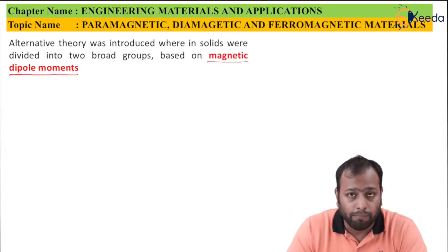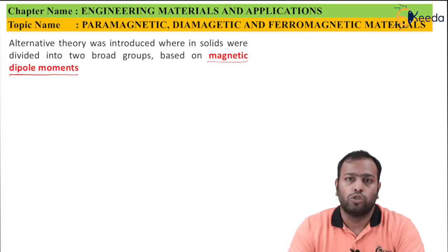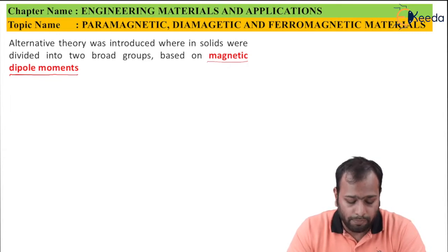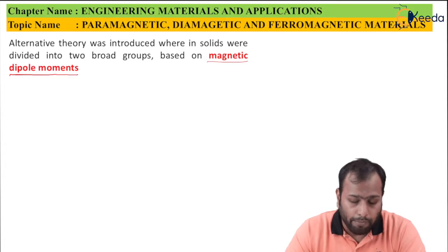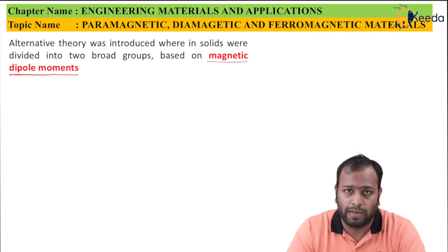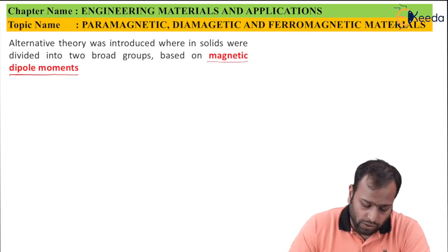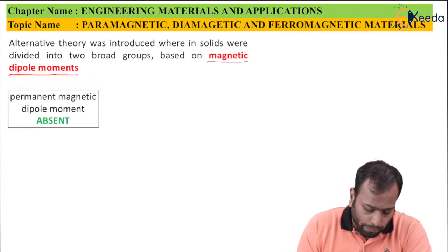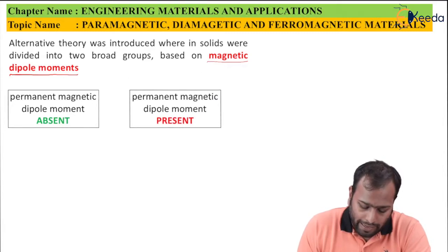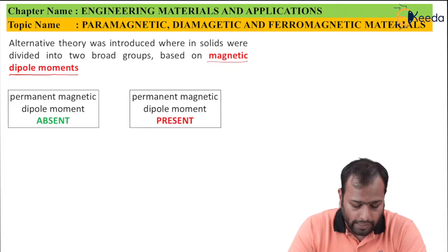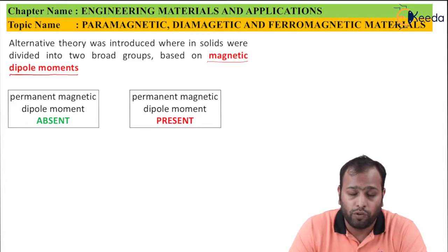Fun fact: this is the most important and latest classification of magnetic materials. In exams, whenever the examiner asks you to state the types of classification, you need to mention both classifications, with emphasis that the magnetic dipole moment parameter is the most recent one. Based on the magnetic dipole moments, we have two cases: when the permanent magnetic dipole moment is absent, and when it is present.